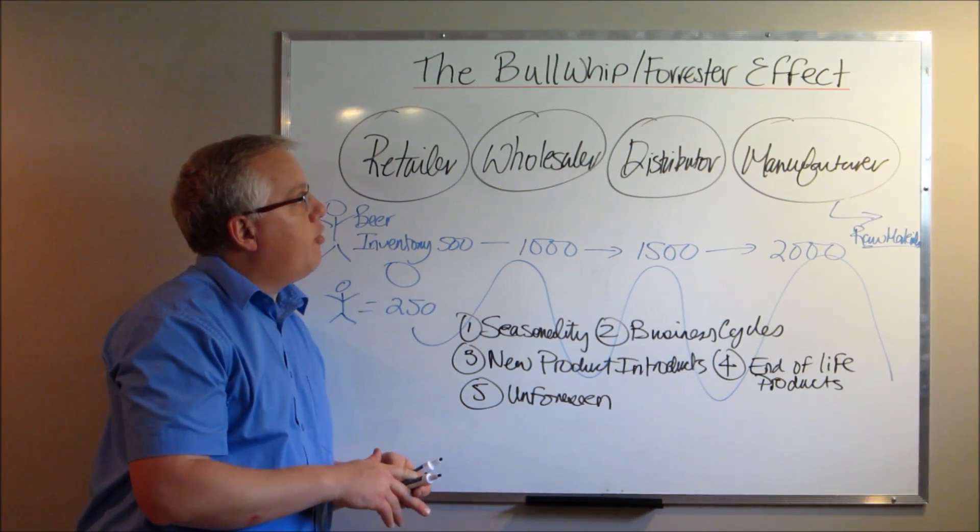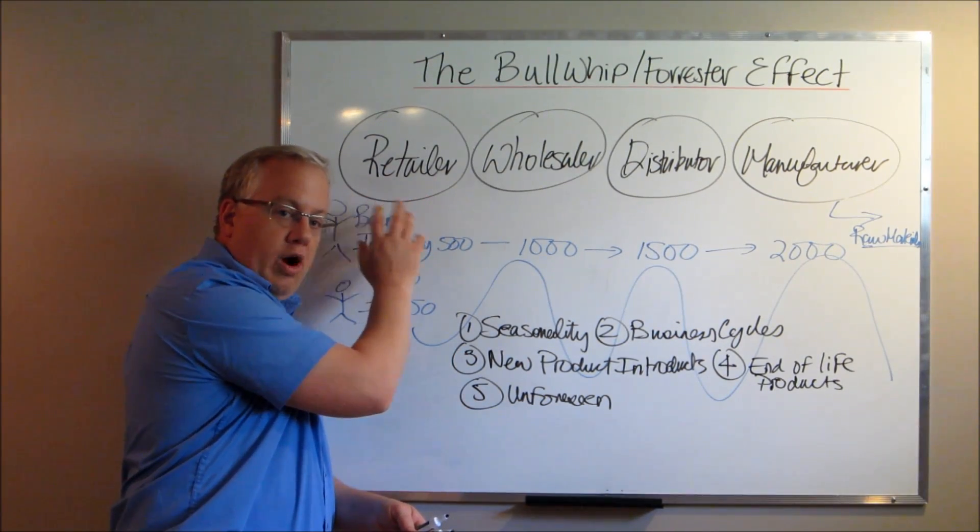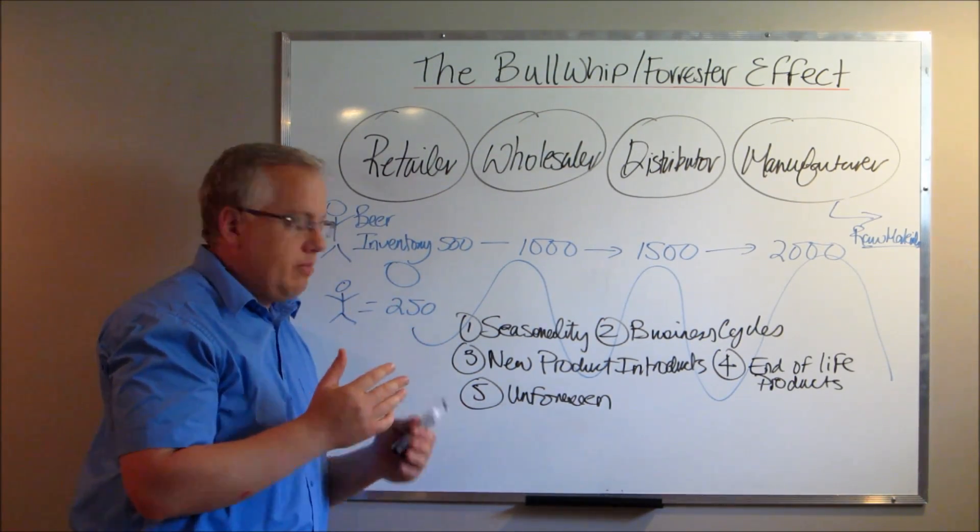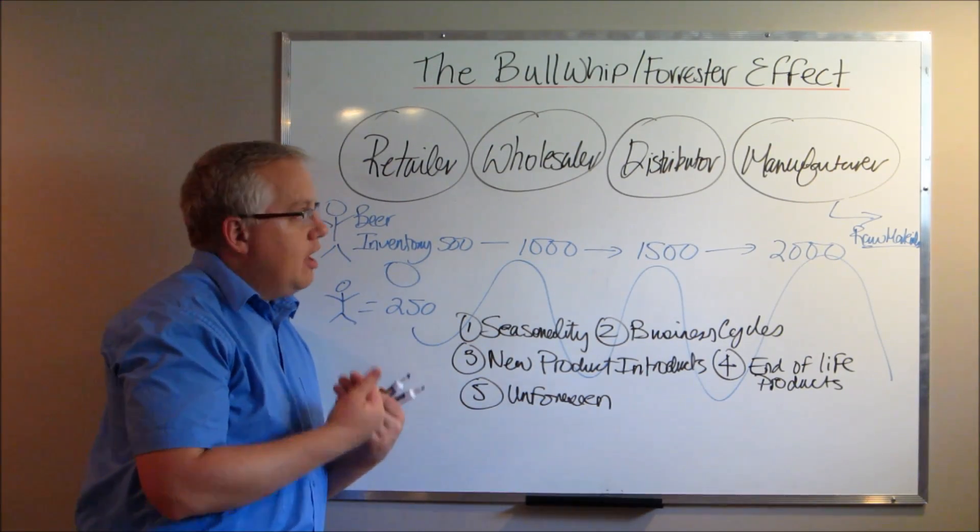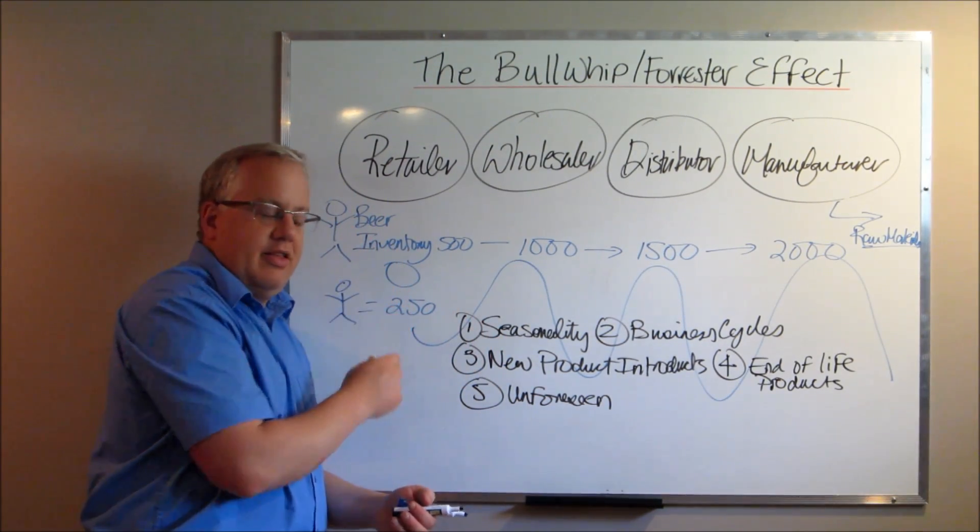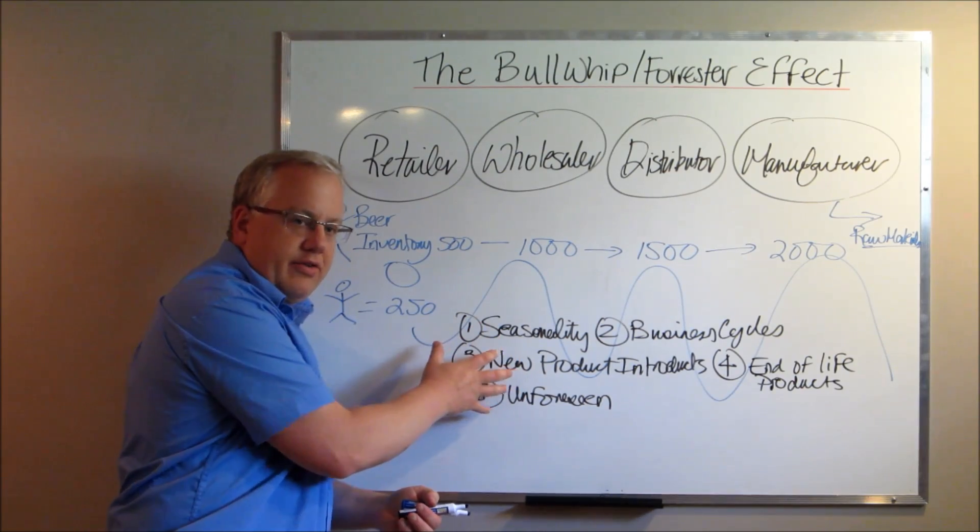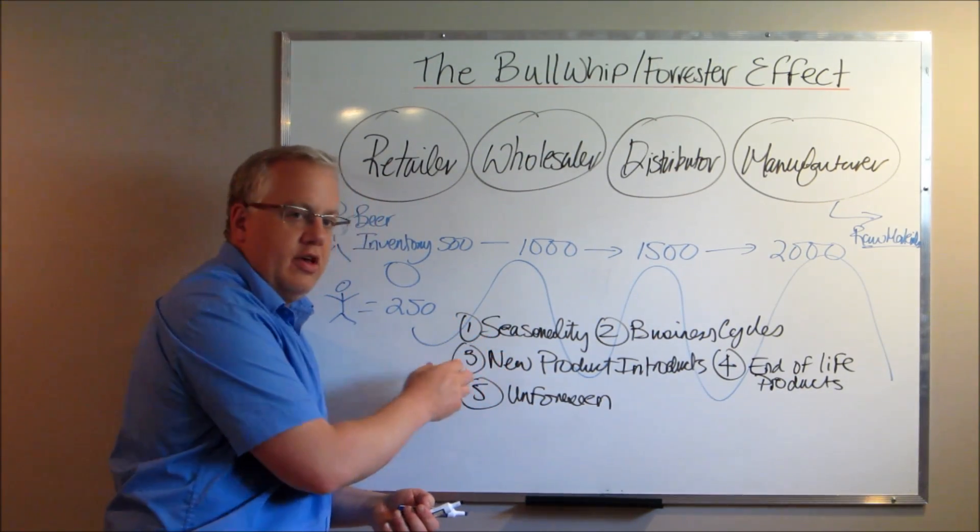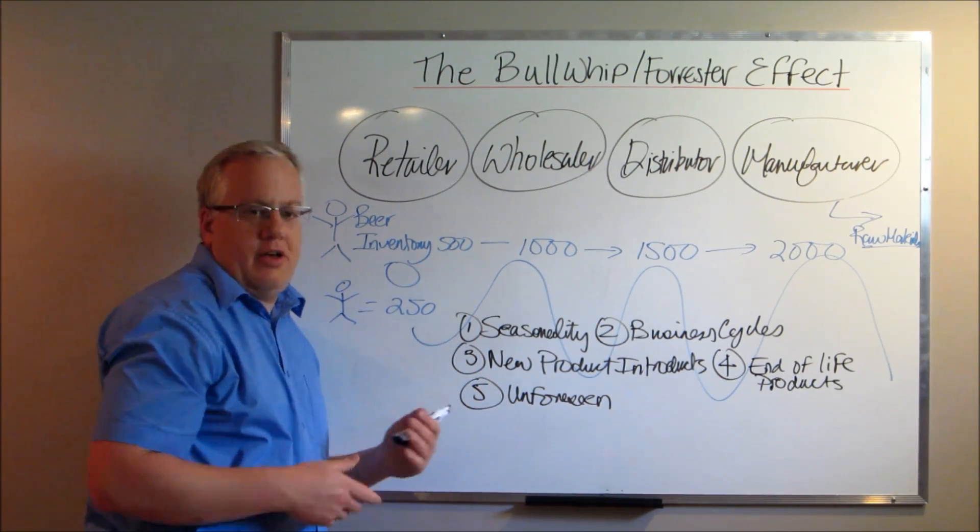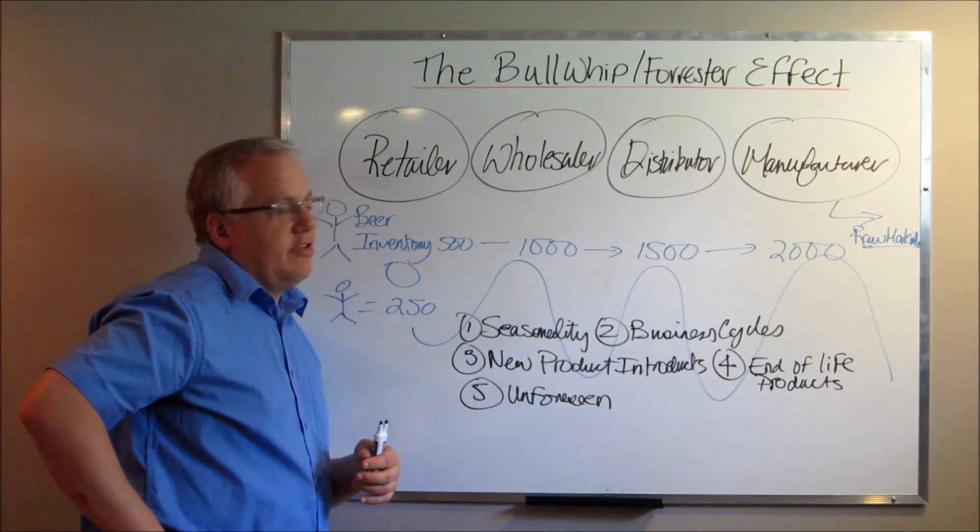So that's it. The bullwhip Forrester effect. Make sure you pay attention to these five warning signs. Make sure you understand the supply chain and where you fit in the supply chain and make sure you understand exactly how these sudden and unforeseen spikes in demand can really impact your supply chain. And pay attention to these five areas here, because a lot of times this bullwhip effect, this reverberating effect throughout the entire supply chain comes from one of these five areas. And if you're cognizant of these five areas, you'll be better prepared to handle this type of situation. So that's it. The bullwhip Forrester effect. Please subscribe to my blog and to my YouTube channel. That's it. Ian Johnson, drivesuccess.com. Bye-bye.